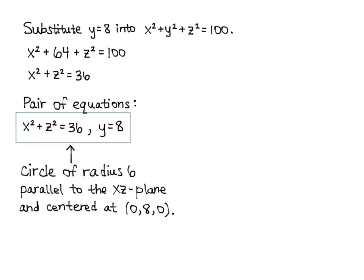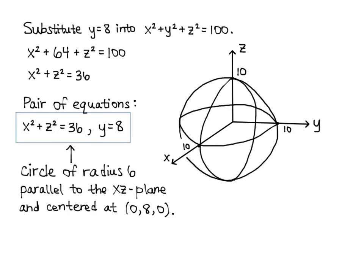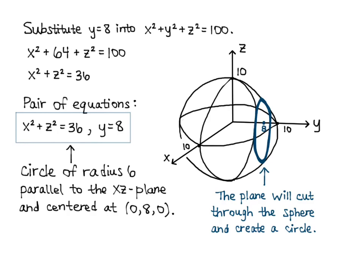Let's sketch this. I draw the X, Y, and Z axes, sketch the sphere of radius 10 centered at the origin, and mark Y = 8 on the Y-axis. The plane Y = 8 slices through the sphere and creates a circle centered at (0, 8, 0) with radius 6. This is an example of putting together the concepts you've learned about planes and spheres.